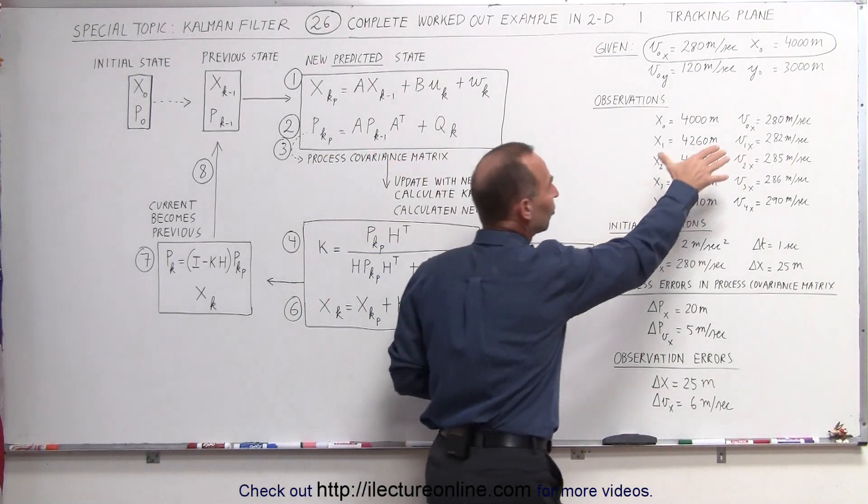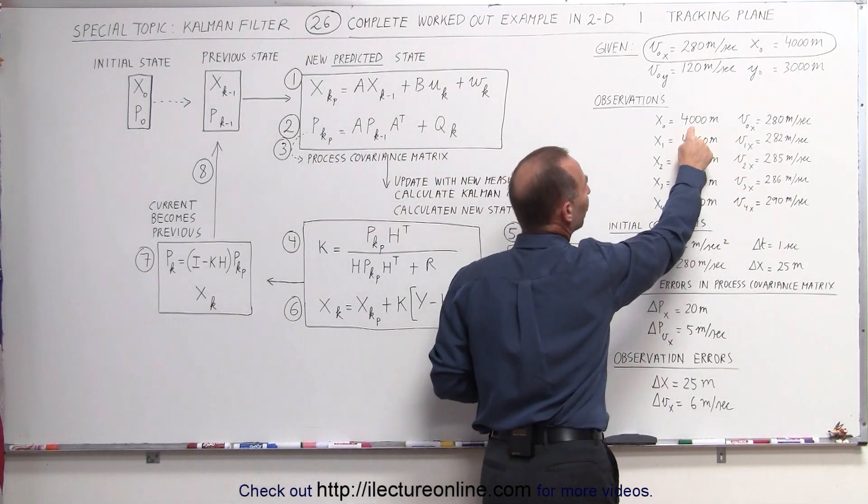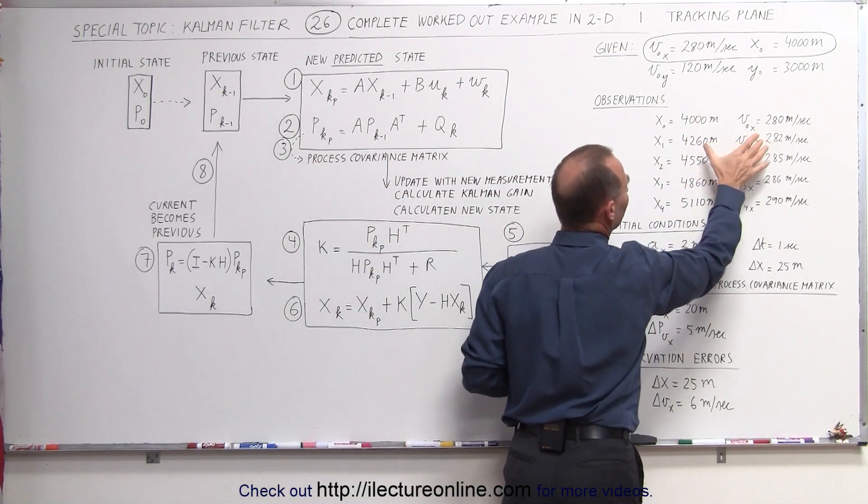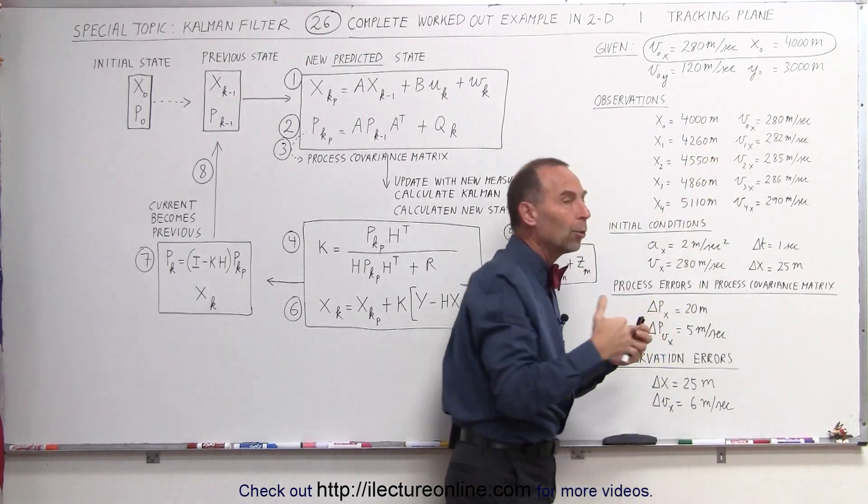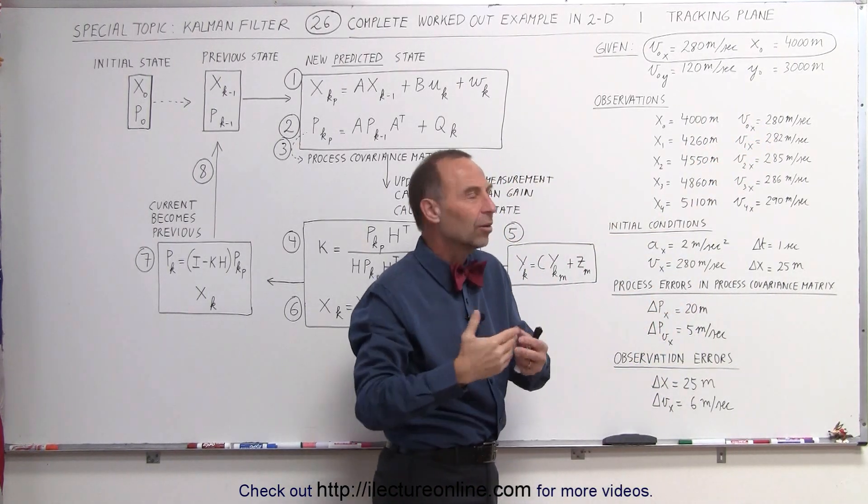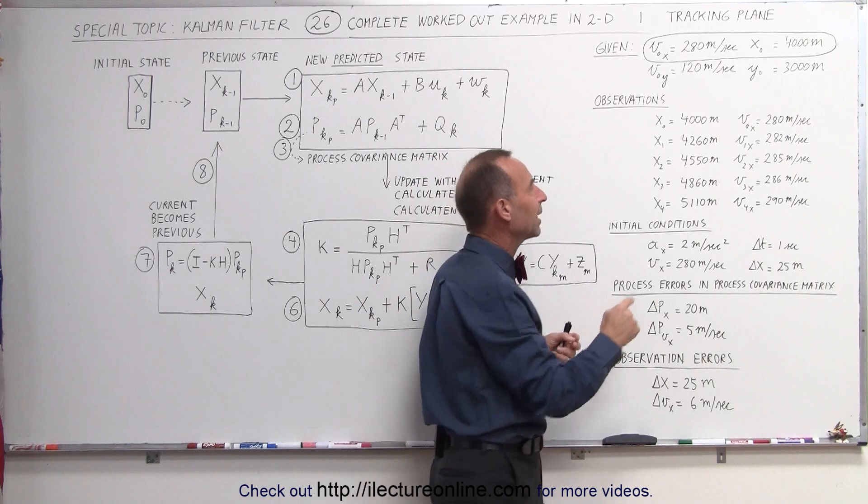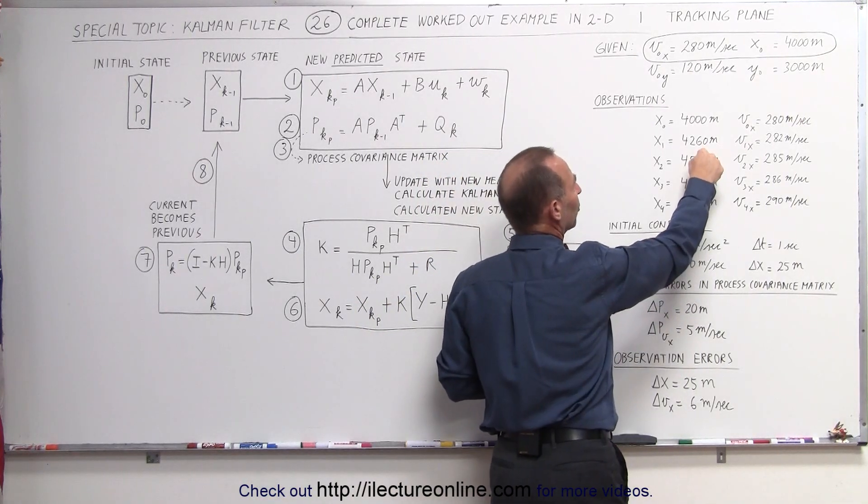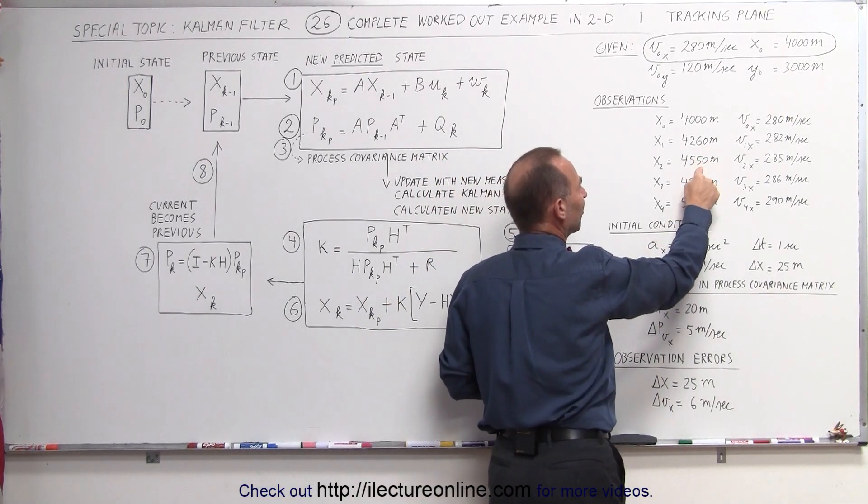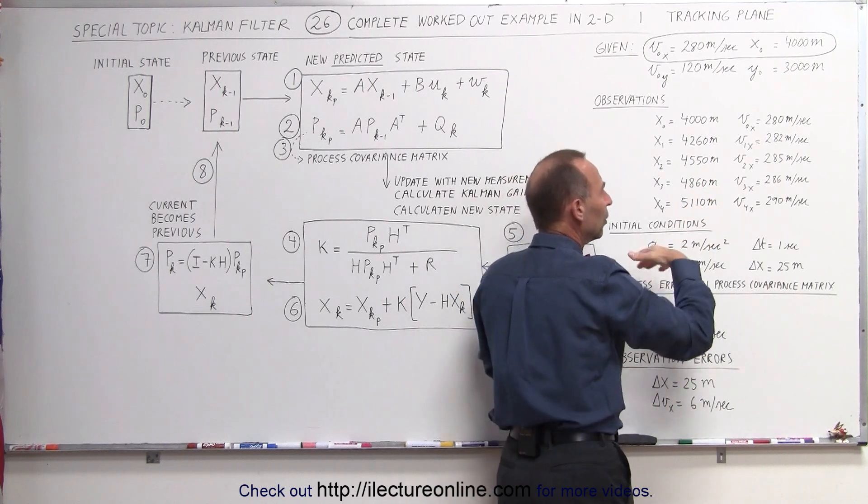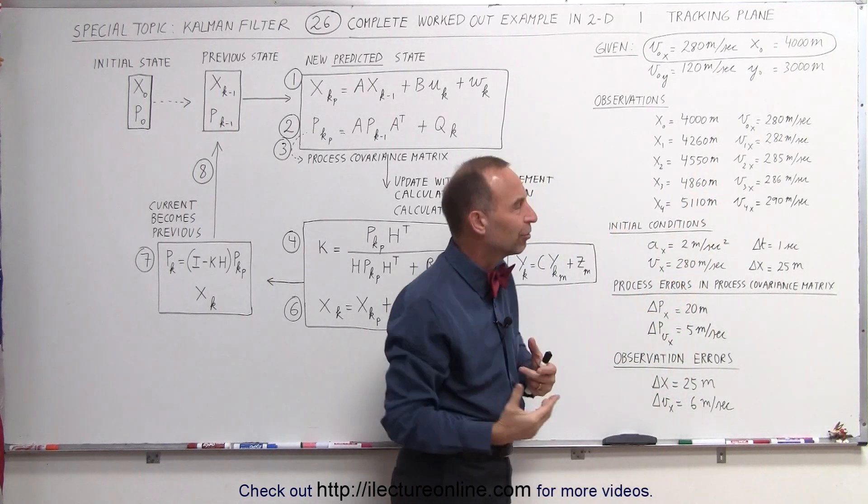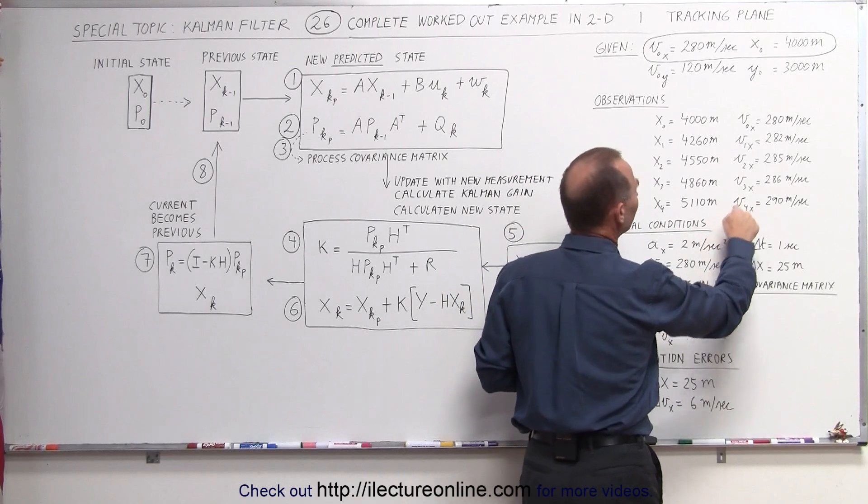Notice that on the observations in the future will be that after we have the initial position, initial velocity, the next observation, and by the way we're going to take delta t, the difference in time is one second to make it easy. So the next time we observe it we'll be at 4260, then at 4550, at 4860, at 5110. Those are just made up numbers but it'll help us figure out how to do the Kalman filtering.